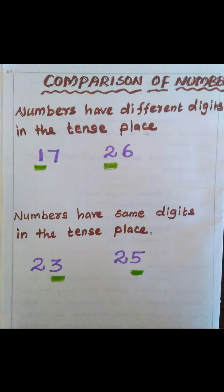Next, when numbers have the same digit in the tens place: 23 has 2 groups of tens and 3 ones, and 25 has 2 groups of tens and 5 ones. So each number has the same tens place.